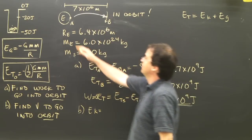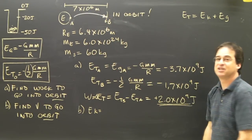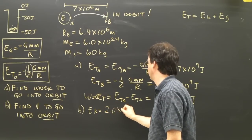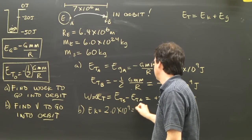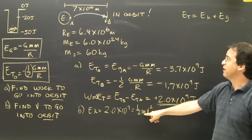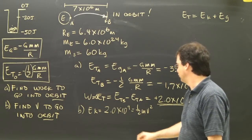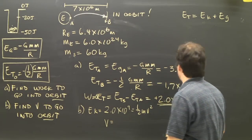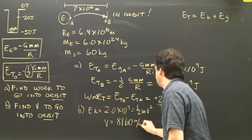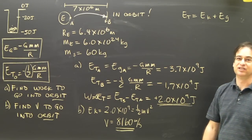Well, it's sitting here. It has so much energy. It's sitting here. It has so much energy. I had to add 2 times 10 to the 9 joules. So that could have been done as kinetic energy. 2.0 times 10 to the 9 equals 1/2 mv squared. This is the mass of the satellite, which is 60 kilograms. If you plug into that and solve for it, you will get that the velocity is 8160 meters per second. And that's how we find the velocity to go into orbit.